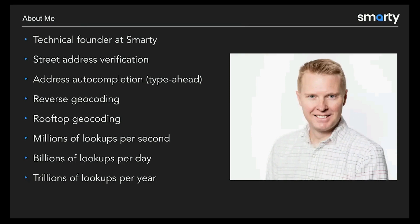What's that? The easy answer is: if you're placing an order online and you type in your address and it pops up and says 'is this your address?' — if it does it correctly, it's my stuff; if it does it wrong, it's one of our competitors. We also do type-ahead auto-completion, reverse geocoding, and rooftop geocoding. From a scalability standpoint, we do millions of lookups per second, billions per day, and trillions per year — designed around microservice architecture paradigms.